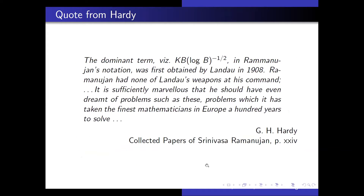This is really a remarkable result. Hardy said of it: the dominant term was first obtained by Landau in 1908. Ramanujan had none of Landau's weapons at his command. It is sufficiently marvelous that he should have even dreamt of problems such as these — problems which it has taken the finest mathematicians in Europe 100 years to solve. He had none of the background to ever think about such problems, yet he actually obtained a result on the number of such squares.